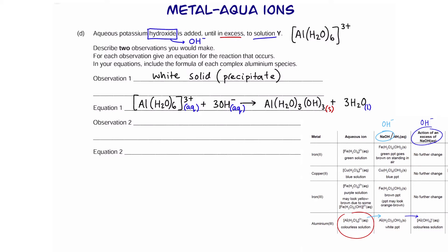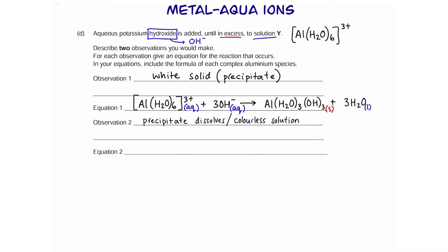The second observation happens when hydroxide becomes excess: the precipitate dissolves, forming a colourless solution. The reactant here is the product from the previous reaction, which reacts with more hydroxide to form the tetrahydroxoaluminate complex.